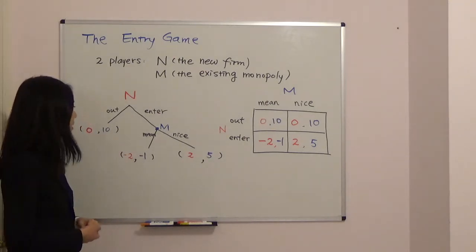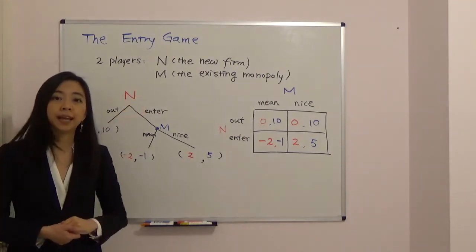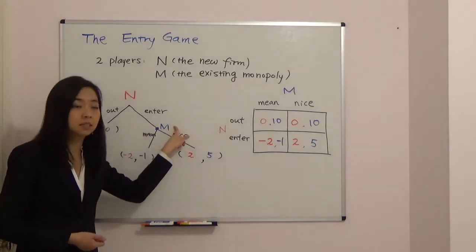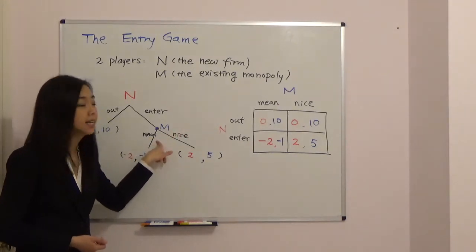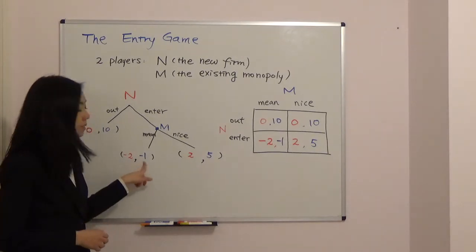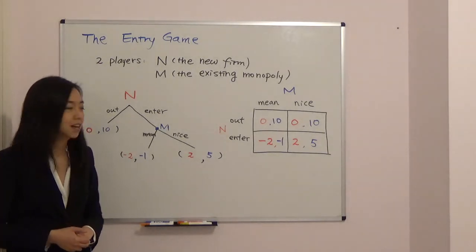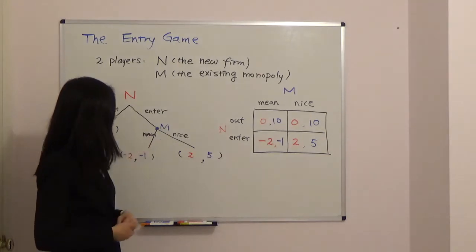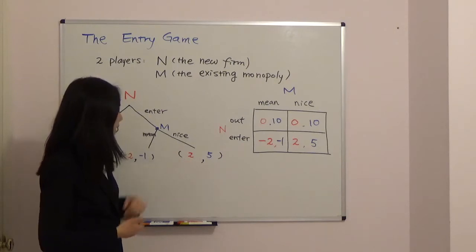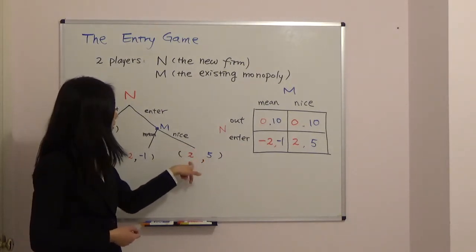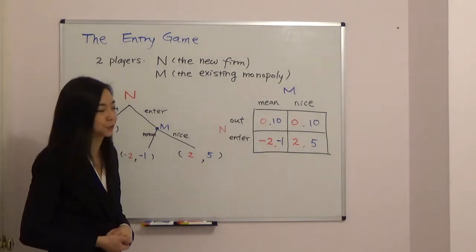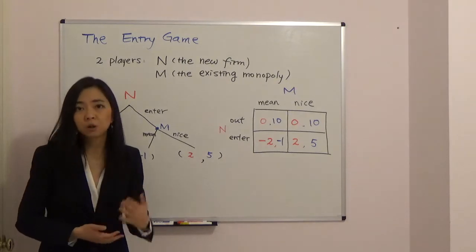If the new firm chooses to enter and the monopoly plays mean by starting a price war, the new firm suffers a two million dollar loss and the existing monopoly suffers a one million dollar loss. But if the existing monopoly chooses to play nice, the new firm enjoys a two million dollar profit and the existing monopoly gets five million dollars. So how do we solve this game for Nash equilibrium?